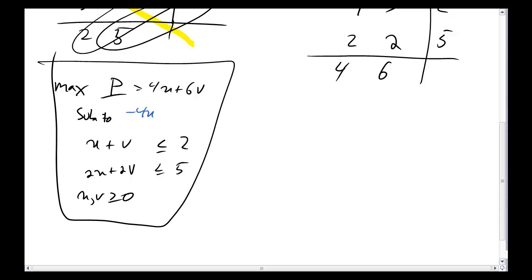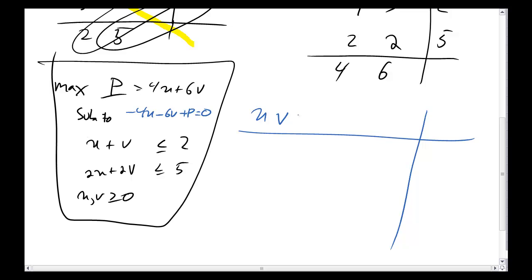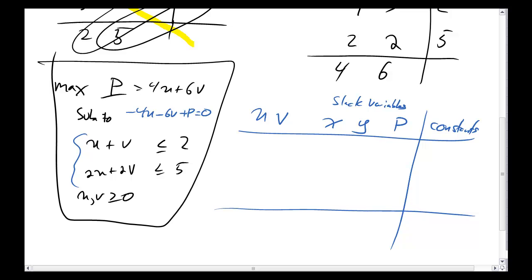So I write minus 4u minus 6v plus p equals 0. Now I'm ready to set up my tableau with columns for u and v. Because I have two inequality equations, I'm going to have two slack variables — I'll call these x and y. I also have my constant p and then my row of constants.